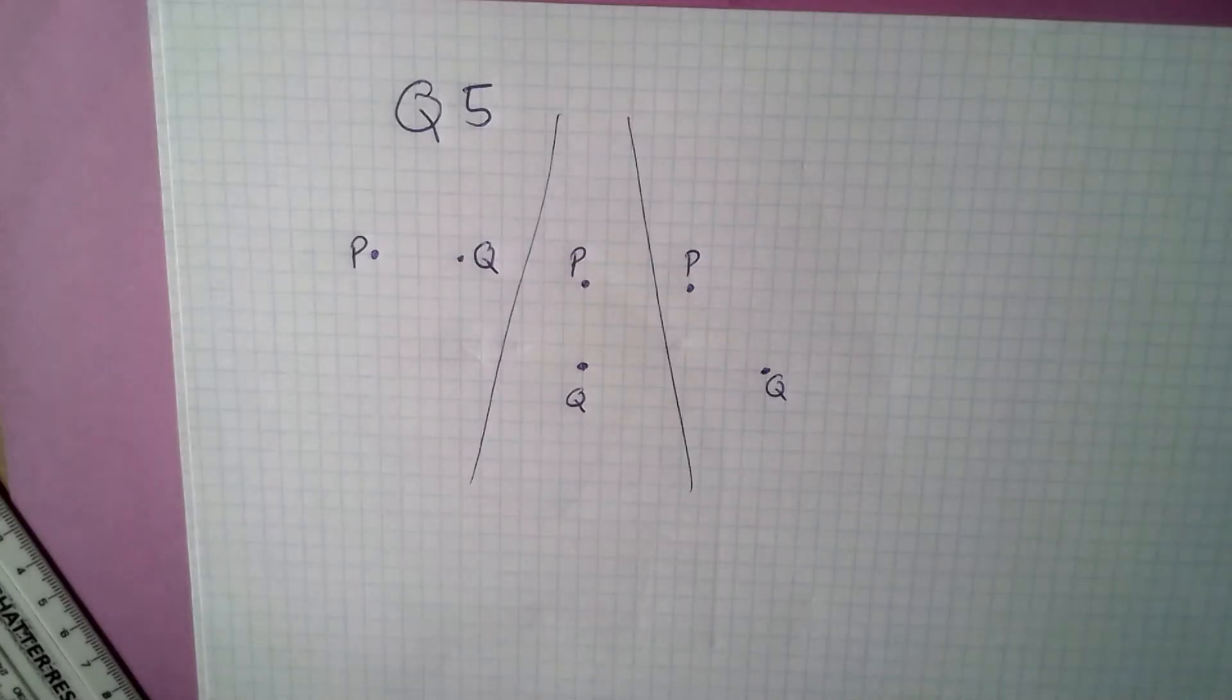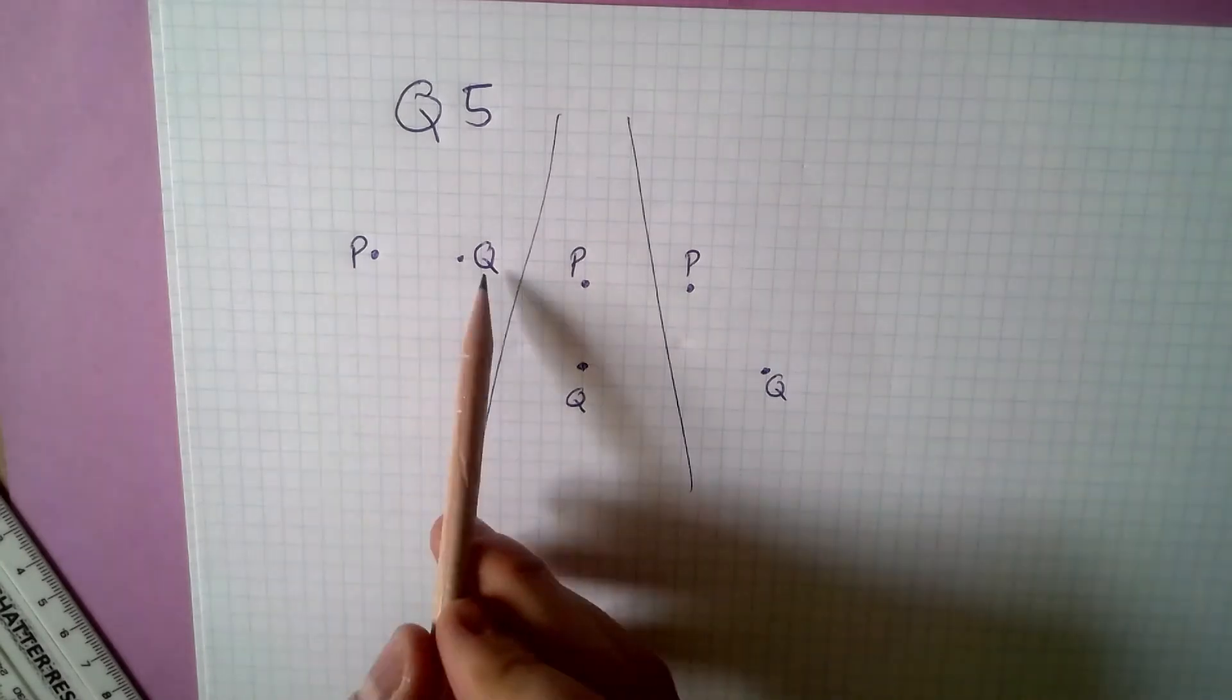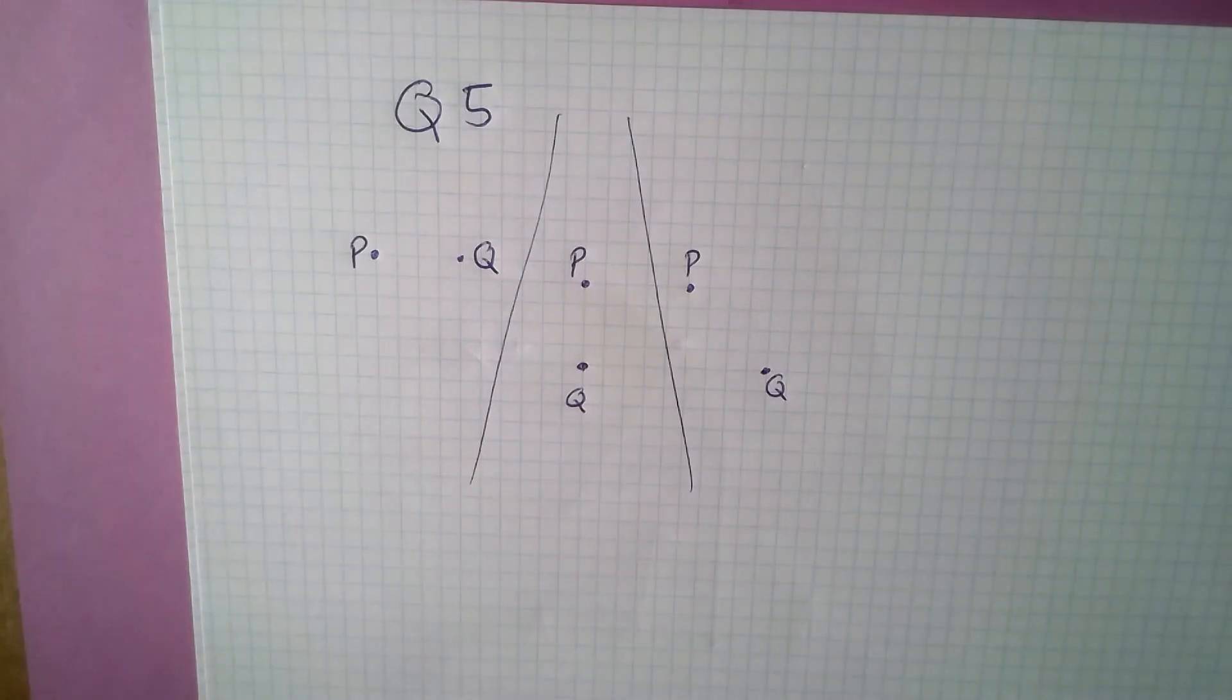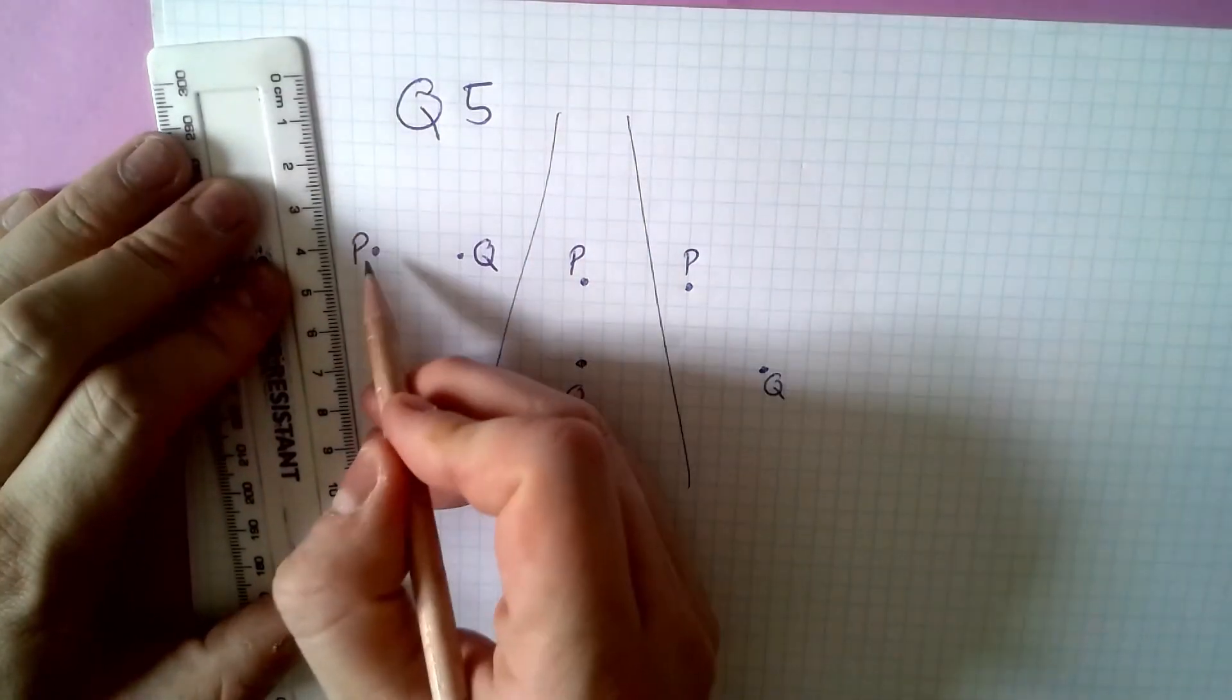For question five, you need to draw the loci of points which are equidistant from P and Q. Equidistant means the same distance from P and Q. Now, since it says draw and not construct, I don't need to use compasses. I could do a perpendicular bisector of P and Q, and that would create the line down the middle. But as it's on squared paper, and as it says the word draw, I'm just going to go exactly halfway.